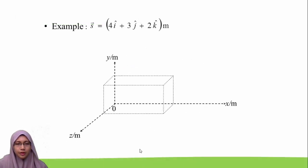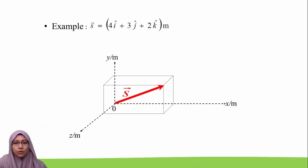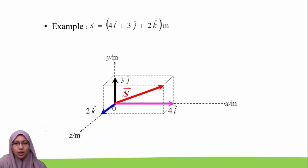Here is an example of how we express a vector. In this example, we have vector S, and the way we write vector S is 4 I-hat plus 3 J-hat plus 2 K-hat.